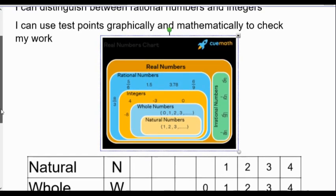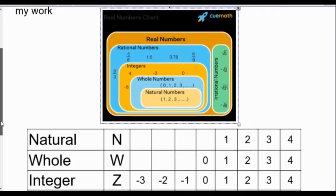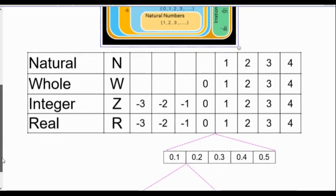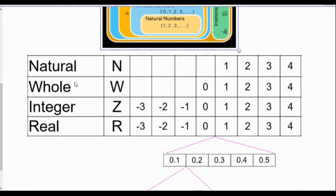Let's see if I can simplify that a little bit. Let's just focus on four: the natural, the whole number, the integer, and the real. They have different symbols. So here are the symbols for those — they are written a little more fancy typically, but N, W, Z, and R.